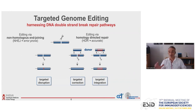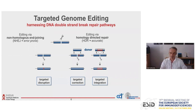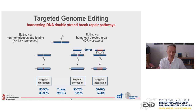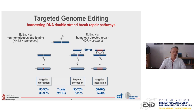An alternative approach which harnesses the same pathway is called targeted integration, meaning you can target the integration of a whole expression cassette into one specific locus of the human genome. Here are some numbers from my lab where you can see the frequencies of gene editing in two different cell types, T cells and hematopoietic stem and progenitor cells. Targeted gene disruption can be quite efficient with 80 to 90% of alleles being disrupted.